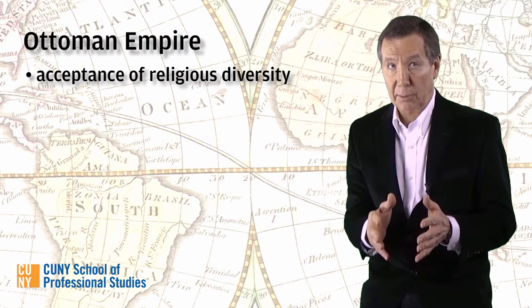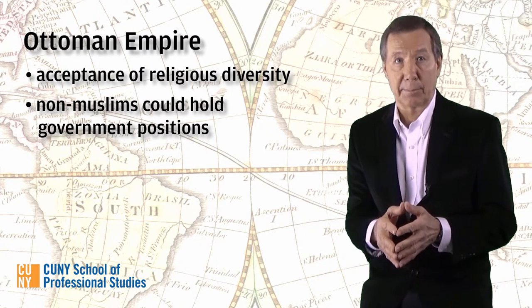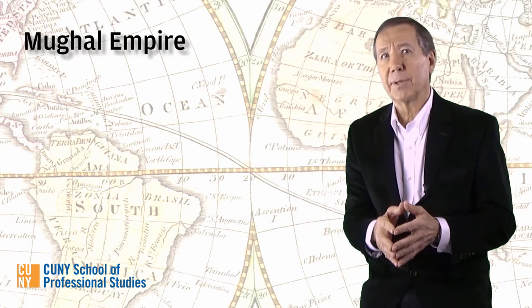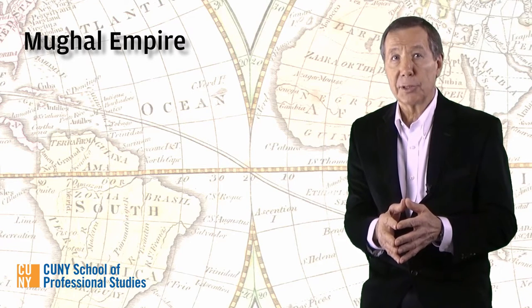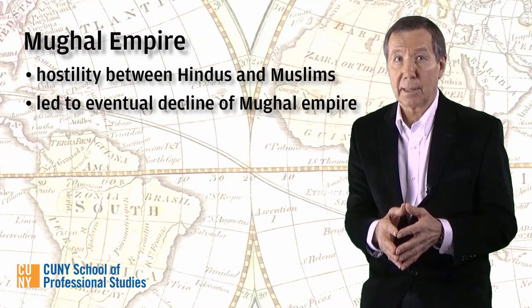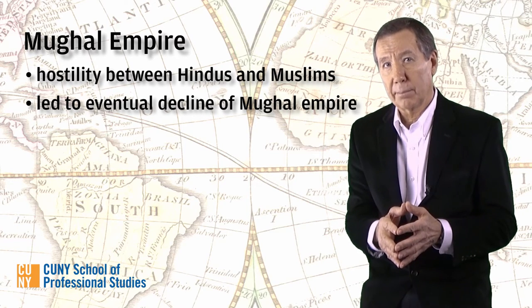For most of its existence, the Ottoman Empire was characterized by an acceptance of religious diversity that allowed Christians and Jews to live their own lives and even occupy important positions in the Ottoman state and in various outlying regions that the Ottoman Turks controlled. However, in the case of the Mughals, the environment shifted in the 17th and 18th centuries and the relationship between Muslims and Hindus became much more confrontational — a development that, in the view of some historians, precipitated the eventual decline of the Mughal Empire. We'll pick up this story in our next lecture. Until then, best wishes.